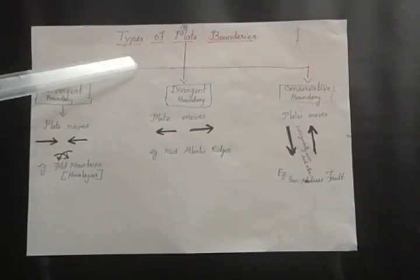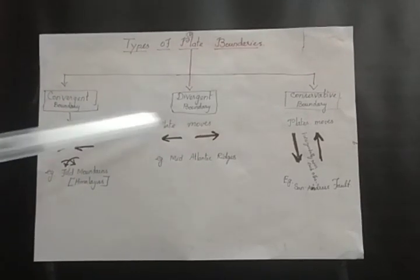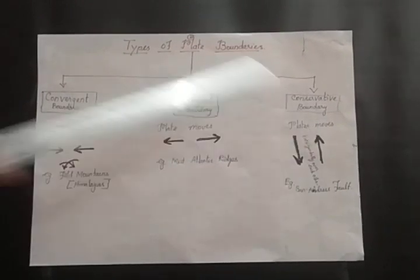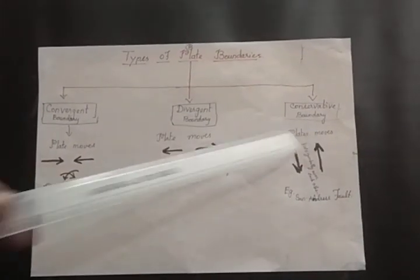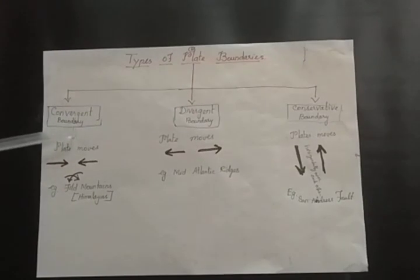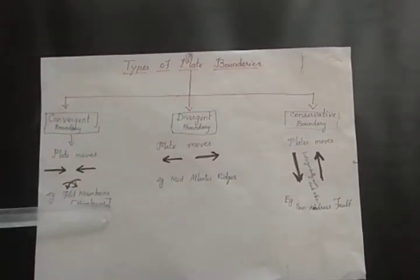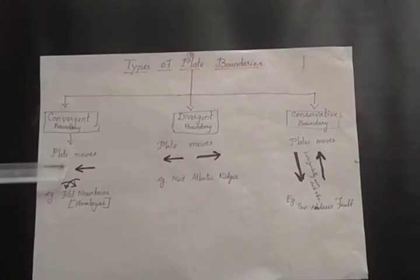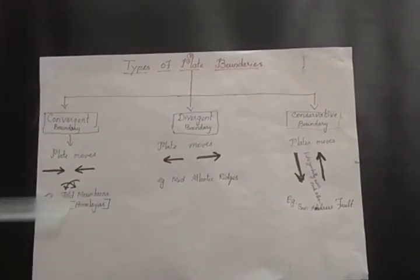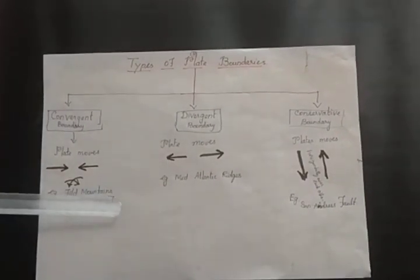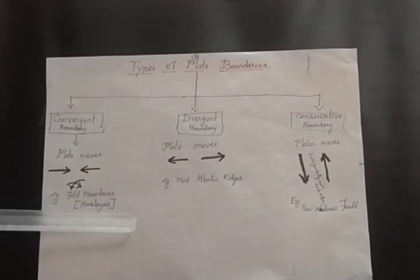There are three types of plate boundaries: convergent boundary, divergent boundary, and conservative boundary. In a convergent boundary, plates move towards each other and sometimes one sinks beneath another. The best examples of convergent boundaries are fold mountains such as the Himalayas, which is the youngest fold mountain range, and the Aravalli range, which is the oldest fold mountain range.